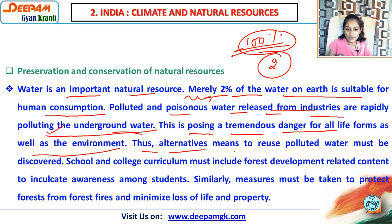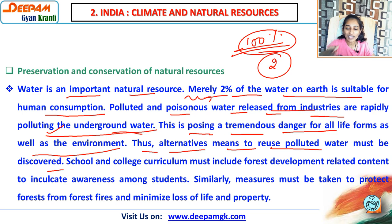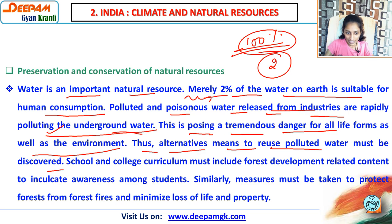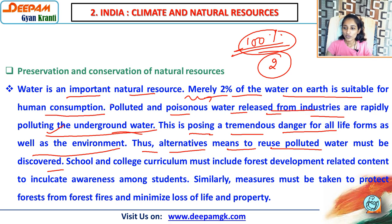Alternatives to reduce polluted water must be discovered. We have to find how we can decrease the pollutants in water before releasing it. If polluted water is released as it is, all fish and crops will die.